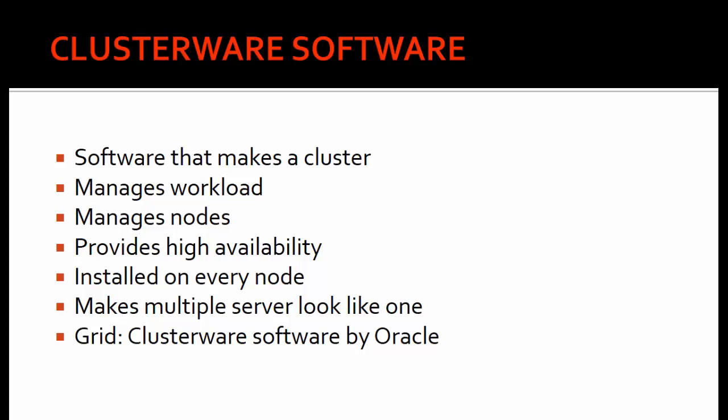The clusterware software maintains a repository where it tracks the load on node 1, the load on node 2, and depending on the load, new incoming connections are directed to a particular node. If node 1 is down, the clusterware software is responsible for pushing new connections directly to node 2. It also manages node eviction — a term used in RAC where nodes go out of the cluster — and the clusterware software restarts those nodes and rejoins them to the cluster.